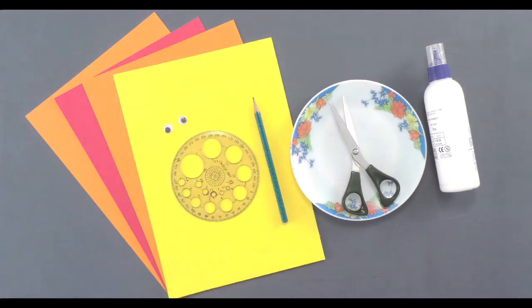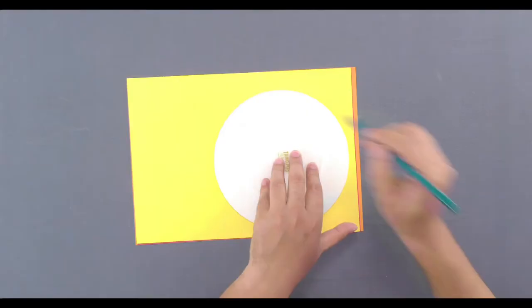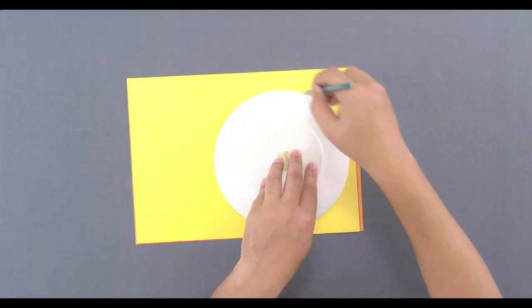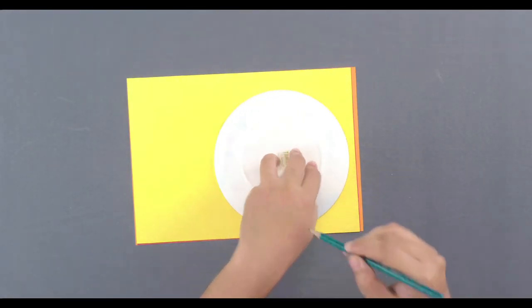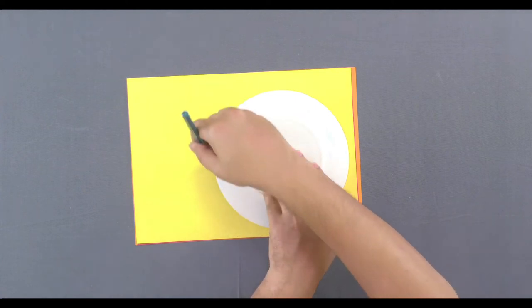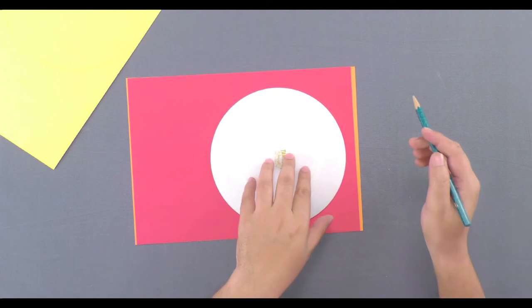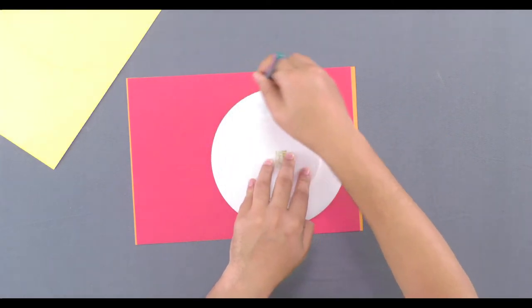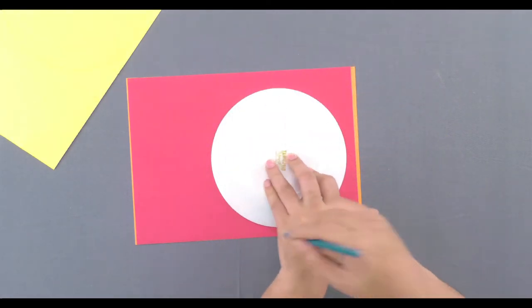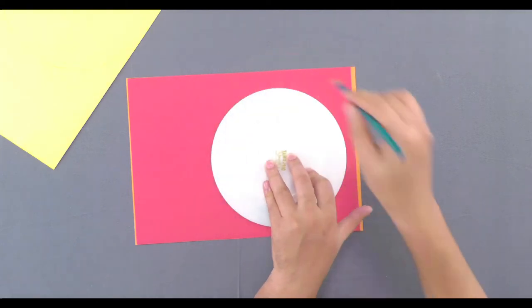First, let us trace the outline of an inverted bowl on a colored chart paper. Also, let us trace out the circle of a plate on a different colored chart paper.